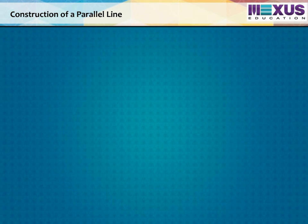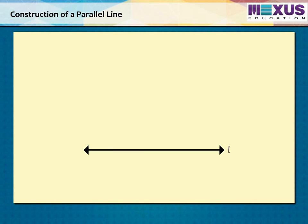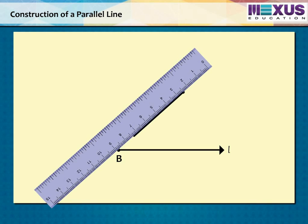Using this property, let's construct two parallel lines using a ruler and a divider. First, draw a line L and a point A outside it. Now take any point B on line L and join A to B using ruler.